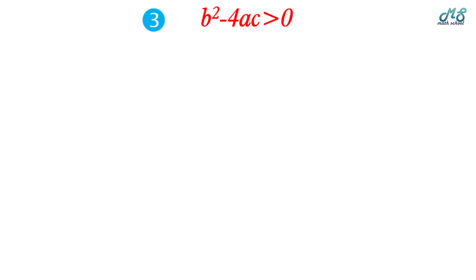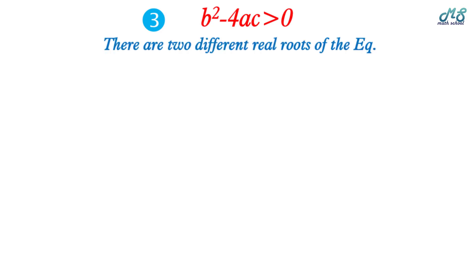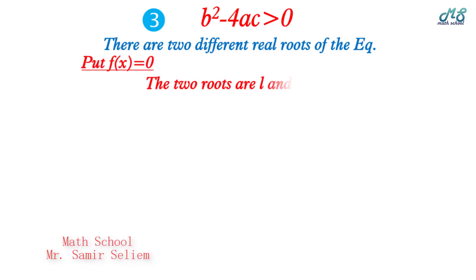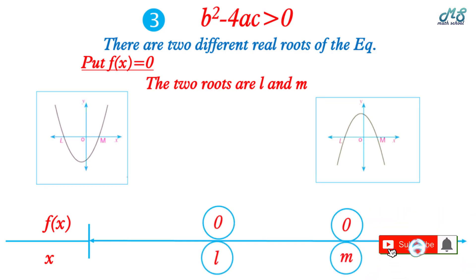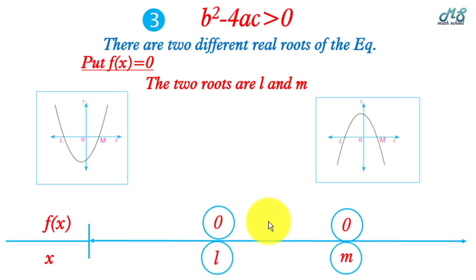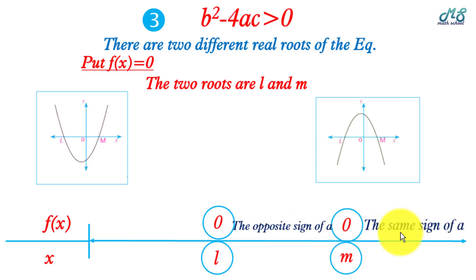Third condition: if Δ = b² - 4ac > 0, there are two different real roots l and m. Put f(x) = 0 to find the two roots. At x = l and x = m, f(x) = 0. Between the two roots, f(x) has the opposite sign of the coefficient of x² (opposite sign of a). At the right and at the left of both roots, the sign of f(x) is the same as the sign of a.